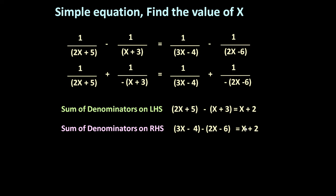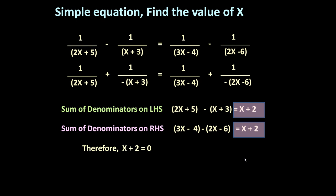Both the left-hand side and right-hand side sums of denominators are the same. So simply we can write x plus 2 is equal to 0, giving x is equal to minus 2 as the answer. Friends, it is a very simple and quick method to solve such equations if they are given in the required format. Thank you very much for watching this video. You can subscribe to my channel if you like it.